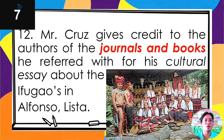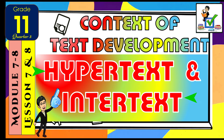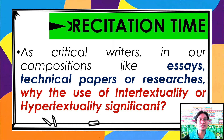And lastly, number twelve: Mr. Cruz gives credit to the authors of the journals and books he referred to for his cultural essay about a fugaz in Alfonso Lista — the answer is intertext. I'm pretty sure that you already know the difference between the two techniques of context of text development — hypertext and intertext. As critical writers in compositions like essays, technical papers, or researches, the use of these two techniques is very important because these are the two certain ways to access information, whether manual or traditional, and non-linear or through hyperlinks.